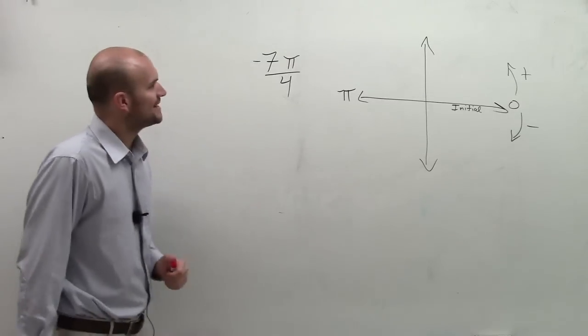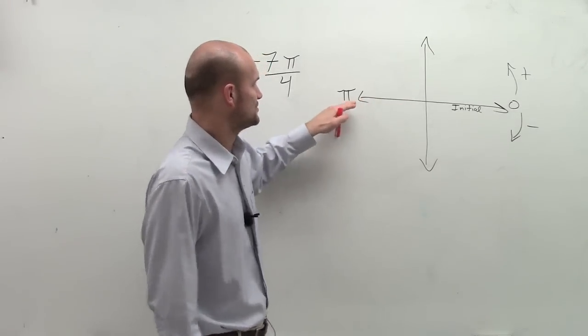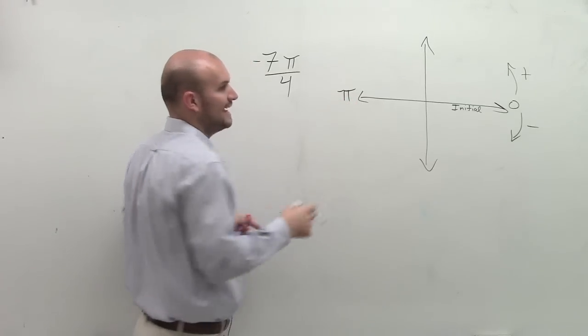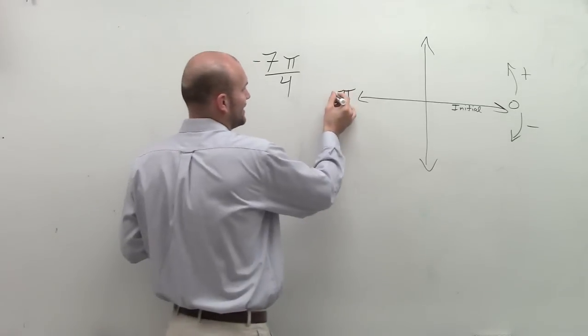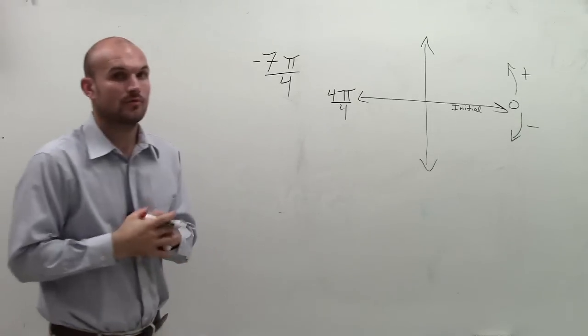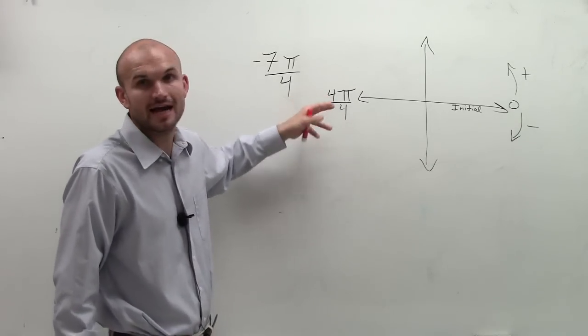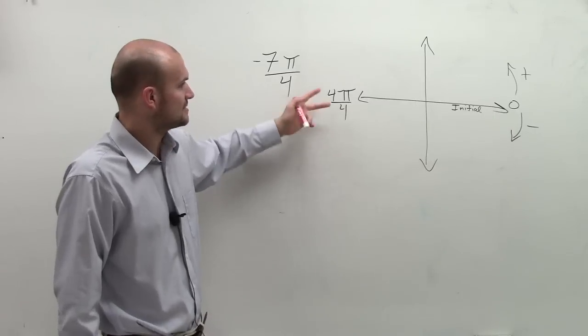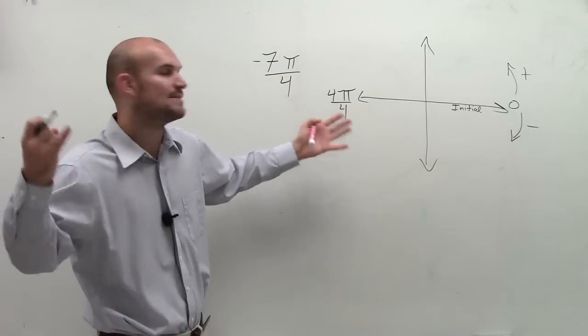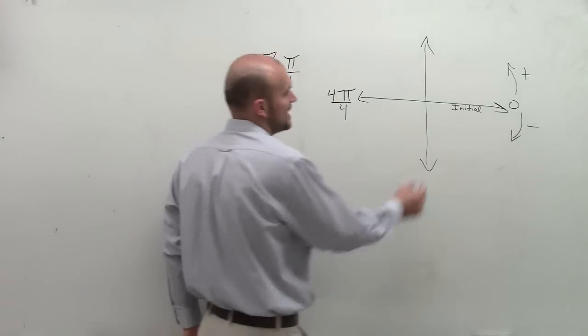So I have negative 7π divided by 4. What I want to do is look at π. I can rewrite π as 4π over 4, right? What that means is, remember this is a fraction, four parts out of your whole, correct? Because 4 divided by 4 is 1, 1 times π is π. But I'm rewriting it as our denominator so you can understand that. What I'm going to do is I'm going to break this up.